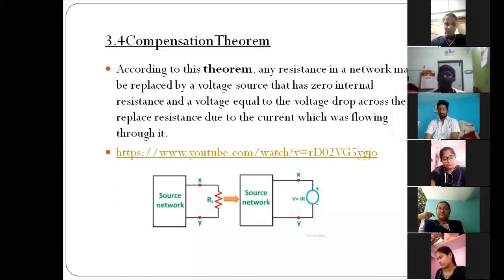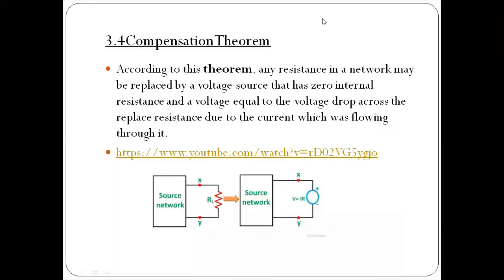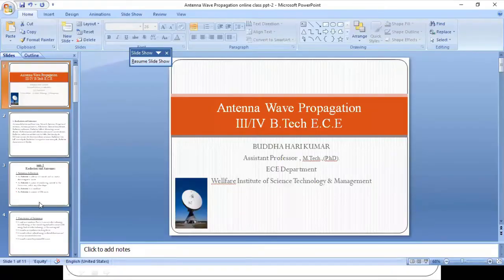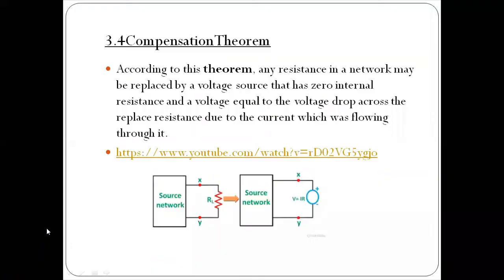Next is the compensation theorem. According to this theorem, any resistance in a network may be replaced by a voltage source that has zero internal resistance and a voltage equal to the voltage drop across the replaced resistance due to the current which flows through it.